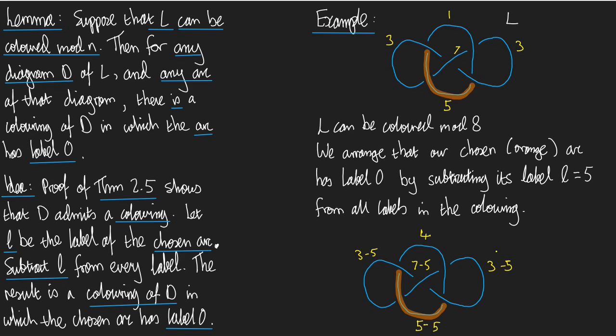What's 3 minus 5? That's minus 5. Mod 8. That's 6. 3 minus 5. That's another 6. 7 minus 5. That's minus 2. Which is... No, that's just 2. Let's just go back and check. I lost it a bit there. 7 minus 5 is indeed 2. OK. And 5 minus 5 is 0.